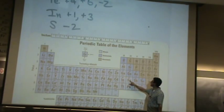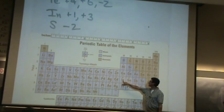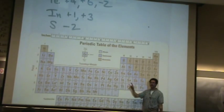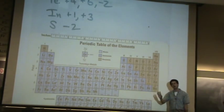If tin just loses this one and this one, plus two. If bismuth loses this one, this one, and this one, plus three. That's where the smaller positive comes from.